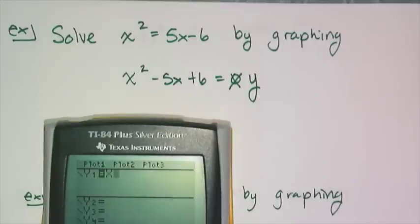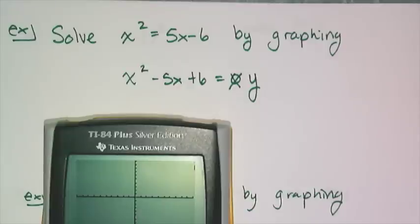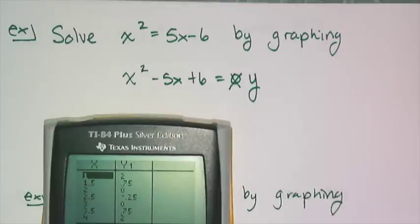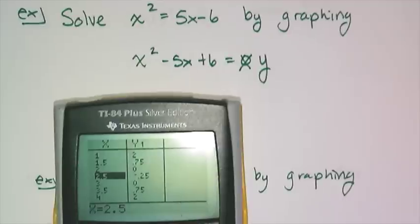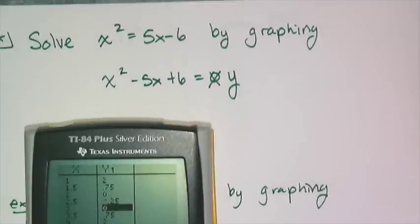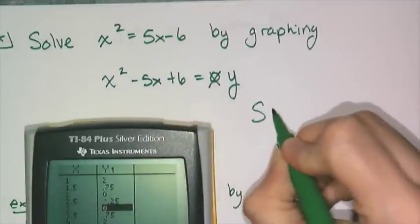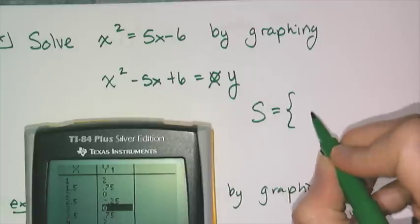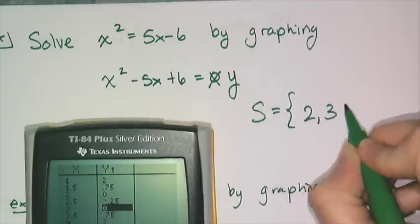So I have x² - 5x + 6, and my job is to look for the x-intercepts. And so I want to graph it really quick. And it looks like I have two x-intercepts, and they look like they're happening around 2 and 3. So I'm going to go to my table, and at the value of x = 2, I have 0 for y. And at the value of x = 3, I have 0 for y. So therefore, my solution set to this equation is {2, 3}.